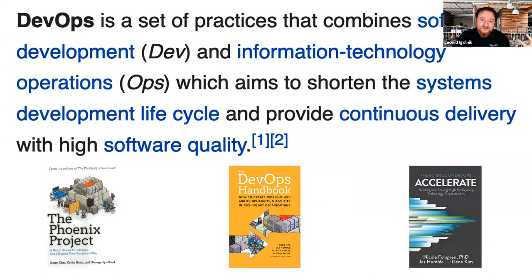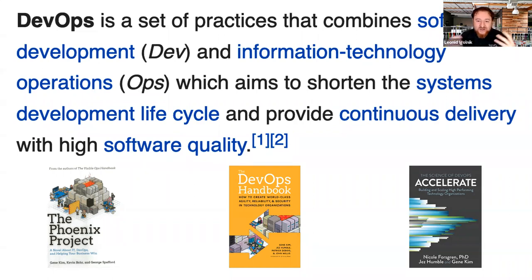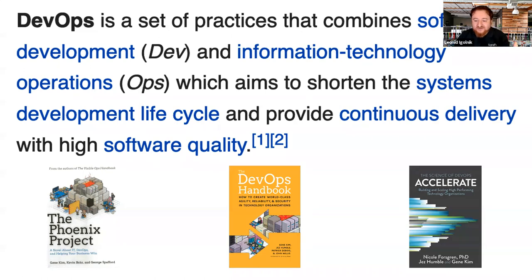Alex starts to realize that DevOps is not really a job title or a position — DevOps is a set of practices. And of course, where do you learn about DevOps if not Wikipedia, the source of all truths. But Alex goes even further and realizes there are some really good books on the subject. The three we like to talk about are the Phoenix Project, the seminal book about DevOps practices; the DevOps Handbook, which talks about the mechanics of implementing DevOps; and of course the Accelerate book.